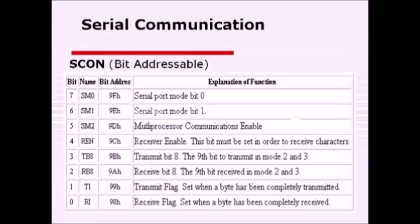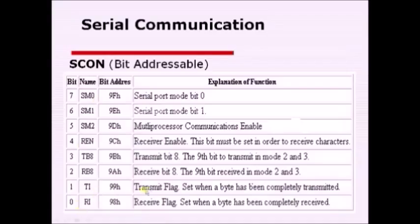REN: if this bit is programmed to logic 1, the receiver gets enabled; if programmed to 0, the receiver is disabled and no data can be received from the external world. TB8 and RB8 are bits used for holding the 9th bit during modes 2 and 3. TI is the bit representing when a character has been transmitted — after transmitting a character, this bit becomes 1 indicating successful transmission. RI represents the status of received data — after receiving a character and storing it in SBUF, RI becomes 1.